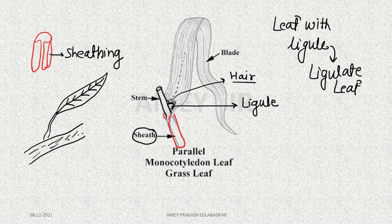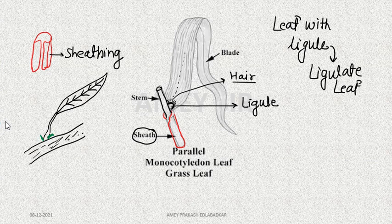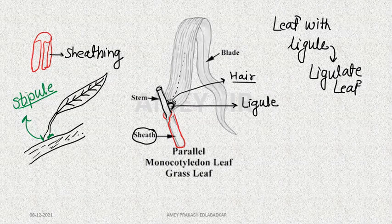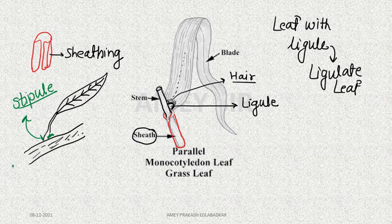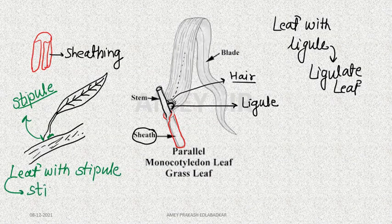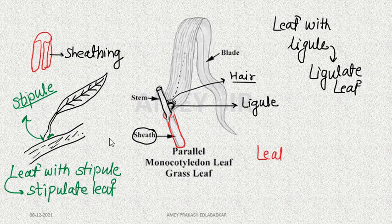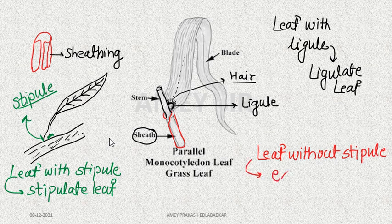At the leaf base, two lateral outgrowths, green in color, are called stipules. There are various types of stipules — lateral, axillary, opposite, ochreate, and foliaceous — but the two most important terms are: a leaf with stipules is said to be a stipulate leaf, and a leaf without stipules is said to be an exstipulate leaf.